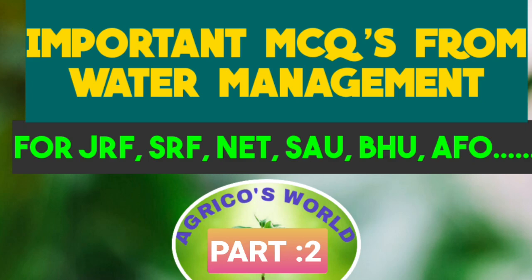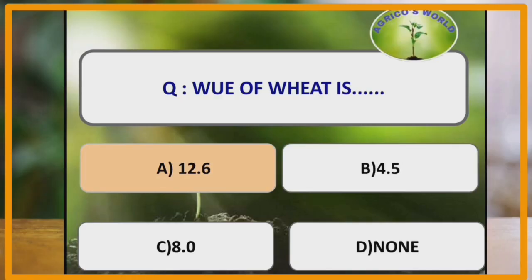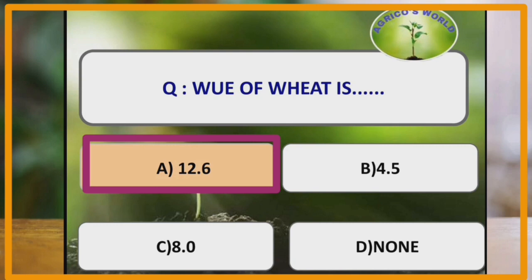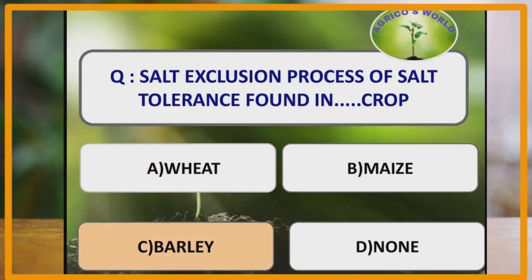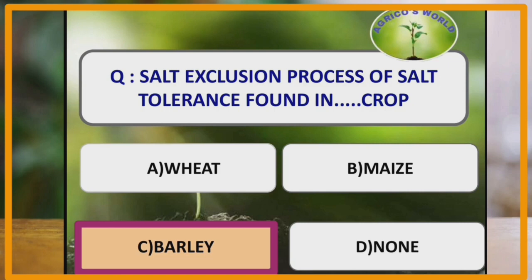Here we are with our first question. Water use efficiency of wheat is 12.6 kg per hectare mm. The salt exclusion process of salt tolerance is found in barley. In barley, the crop is tolerant to salt conditions by the principle of salt exclusion.